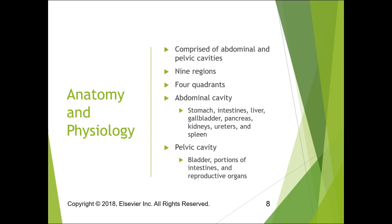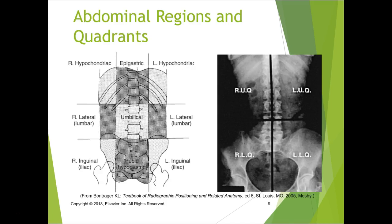The abdomen is divided into abdominal and pelvic cavities, with nine regions and four quadrants. The abdominal cavity contains the stomach, intestines, liver, gallbladder, pancreas, kidneys, ureter, and spleen. The pelvic cavity contains the bladder, portions of the intestines, and all the reproductive organs.